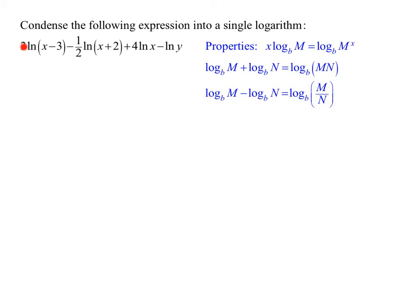Notice I have a two, a half, and a four that I don't want there. I can deal with the negative, but I cannot have the two, one half, and four. So what am I going to do with that?